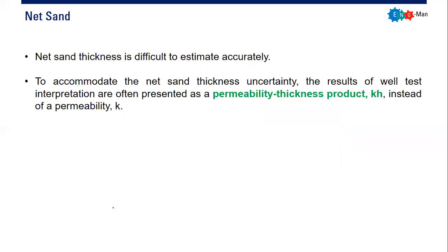In closing, net sand thickness is difficult to estimate accurately. To accommodate this uncertainty, the results of well test interpretation are often presented as a permeability-thickness product rather than permeability alone. Because if we don't have accurate information on H, we cannot ultimately obtain permeability. It is better to talk about permeability-thickness rather than net sand thickness or permeability only.